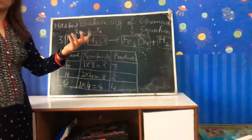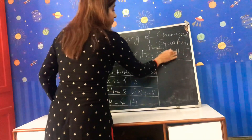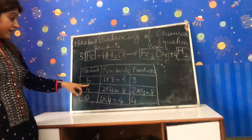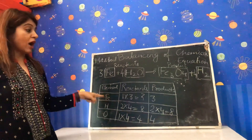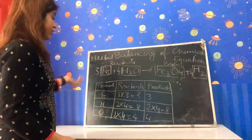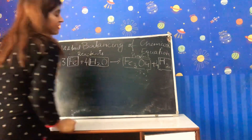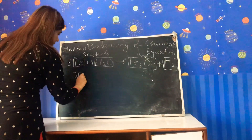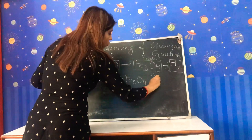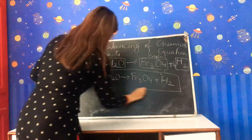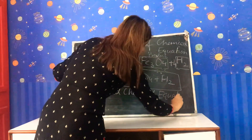Now, if I want to balance hydrogen from 2 to 8 on the products side, what factor do I multiply by? That is, multiplied by 4. So I put 4 in front of H₂ on the products side. Now this is my balanced equation — the number of elements in the reactants: iron 3, hydrogen 8, oxygen 4; and in the products: iron 3, hydrogen 8, oxygen 4 — both sides are the same. So this is the balanced equation. You can write the final balanced chemical equation as: 3Fe + 4H₂O → Fe₃O₄ + 4H₂. This is my balanced chemical equation.